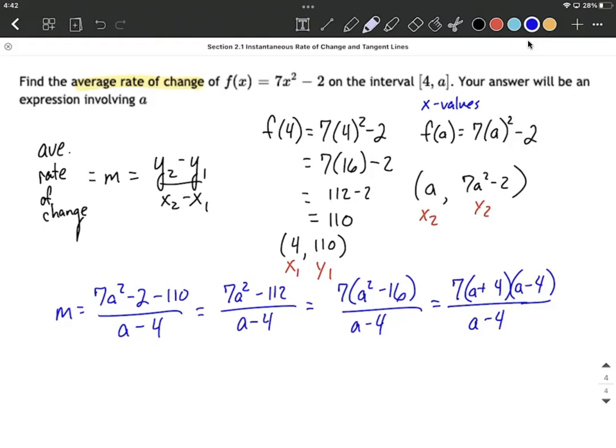But after we've done all that factoring, it actually works out pretty nicely that we have a common factor between the numerator and denominator. So A minus 4, and A minus 4 can simplify down, and our final solution can be 7 times A plus 4.